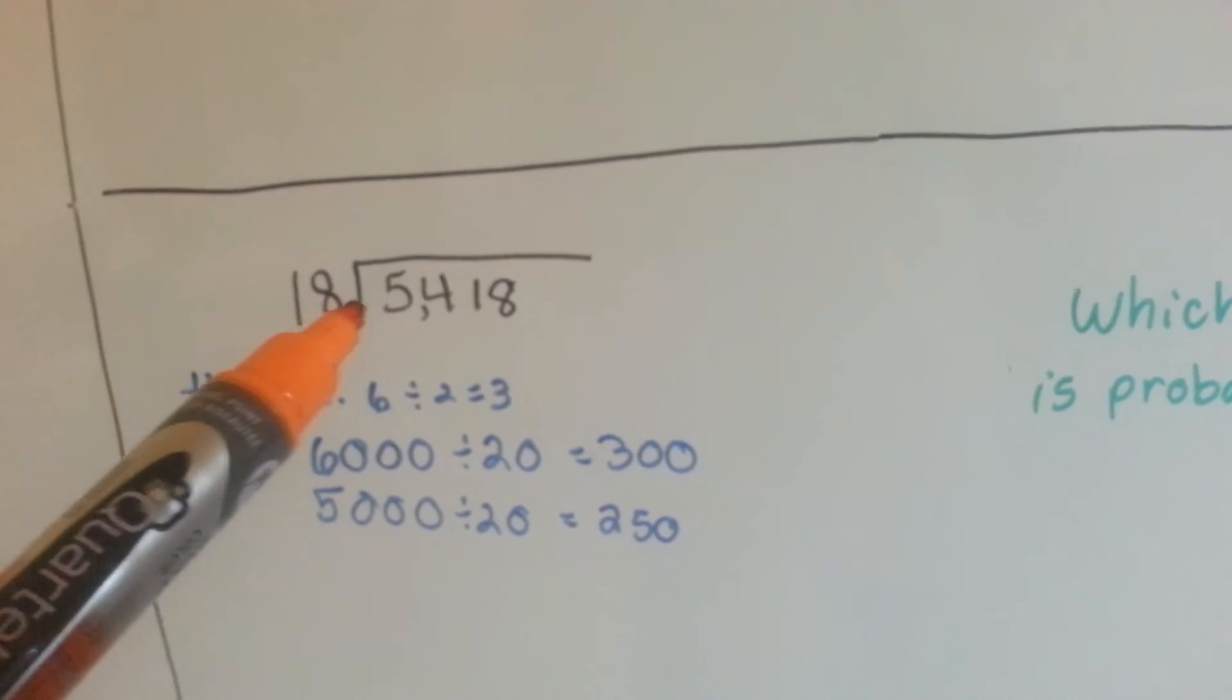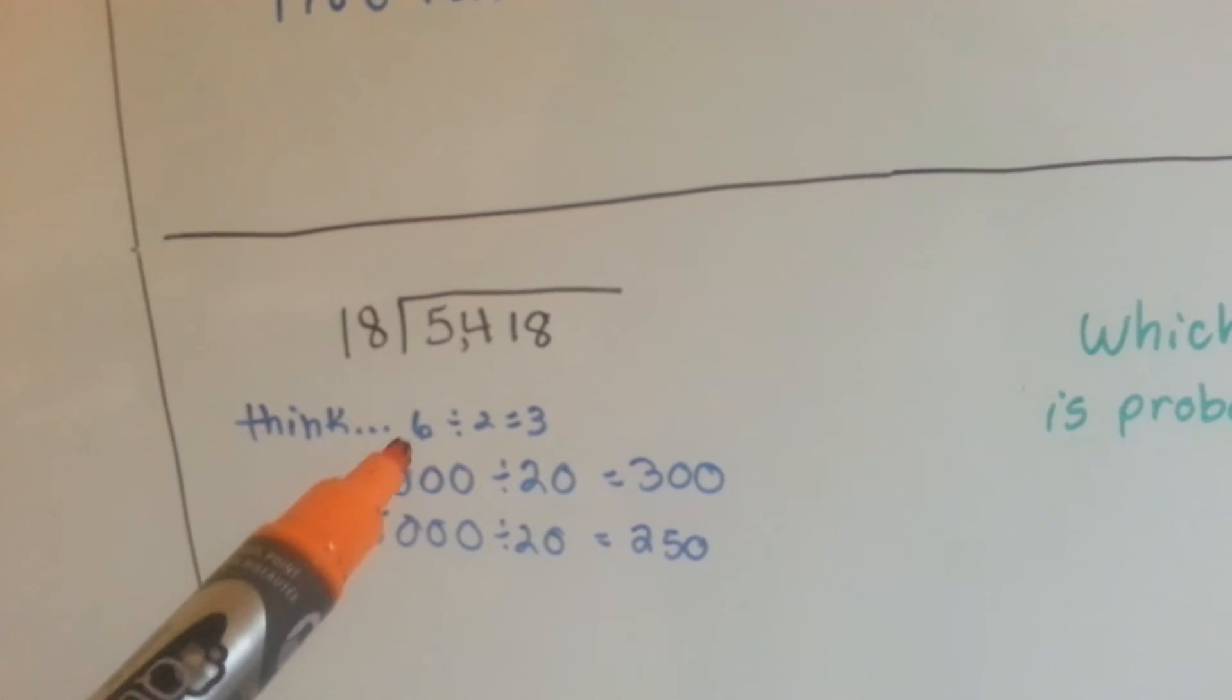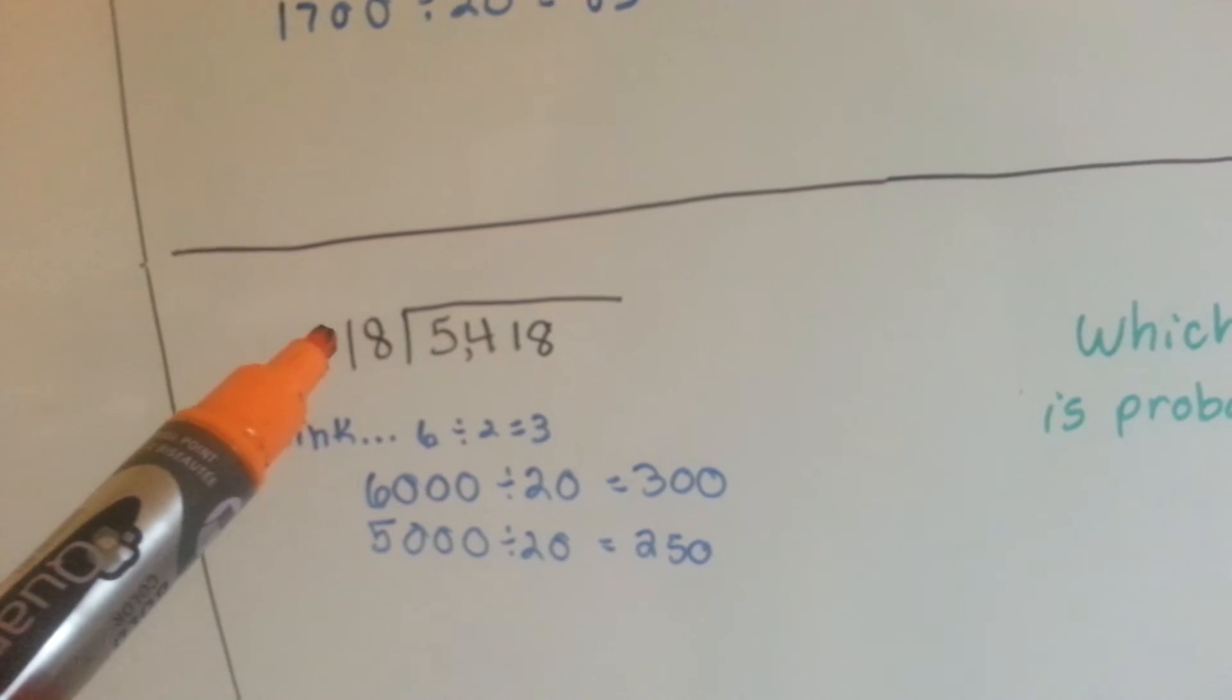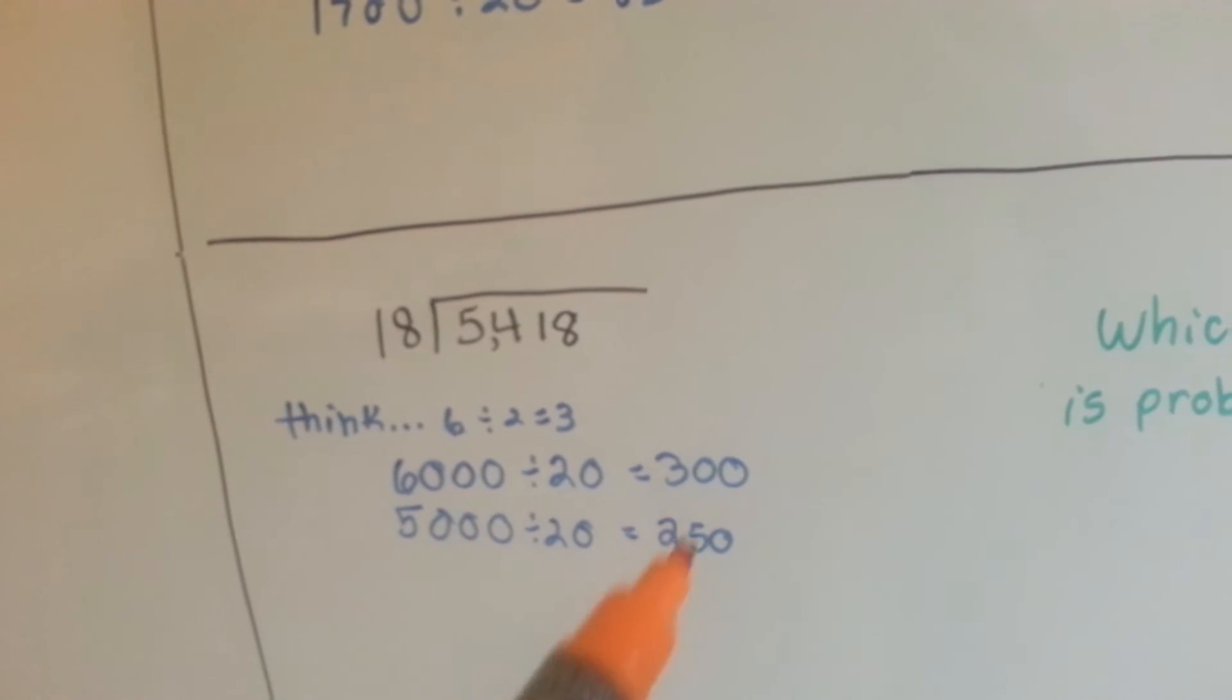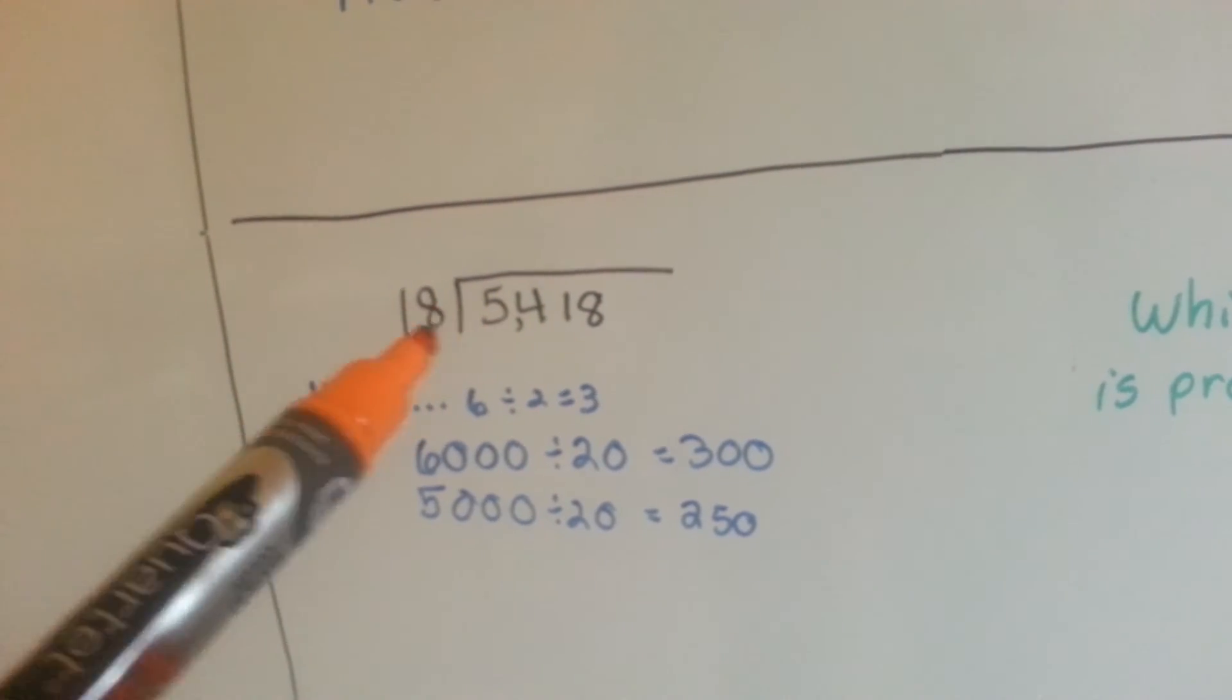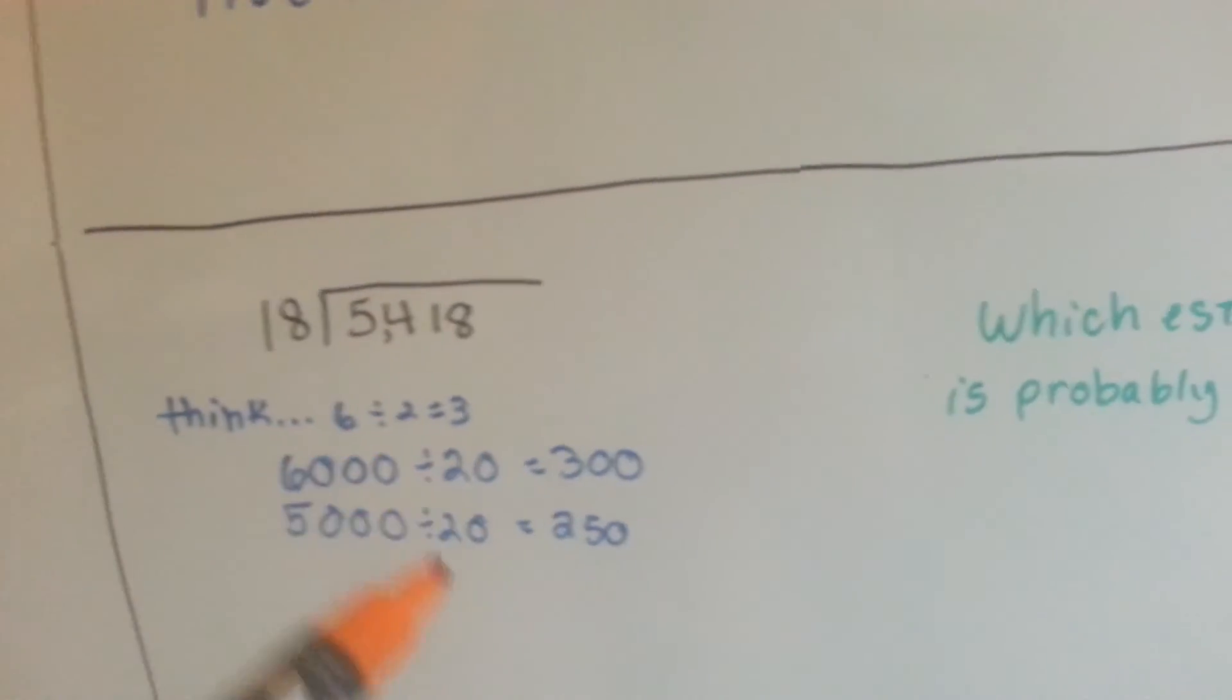How about this one? We have 5,418 divided by 18. Well, if you rounded this to 6,000 and you rounded this to 20, you could think 6 divided by 2 is 3. 6,000 divided by 20 is 300. Or we could say it's 5,000 divided by 20 and it's about 250. So which one do you think is the better estimate?